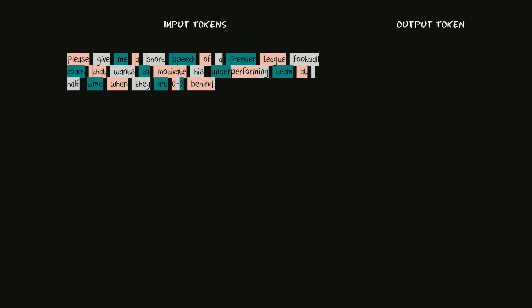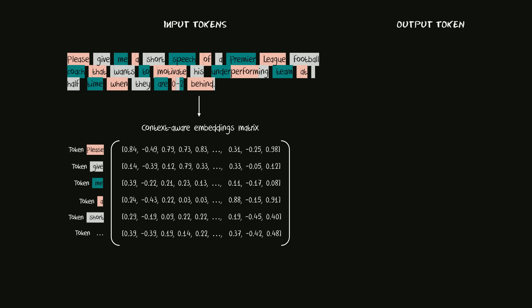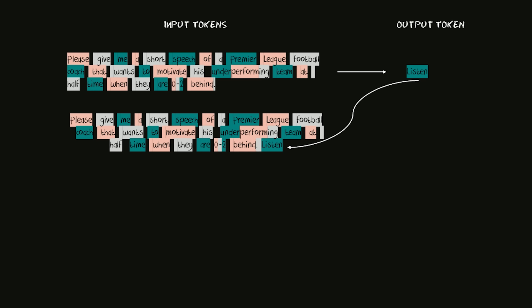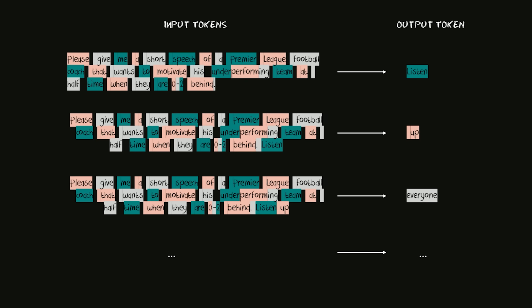So let's go back to our example. Based on the embeddings matrix of our input prompt, the first output token might be 'listen.' In the second cycle, the token 'listen' moves to the input prompt. Based on the new input prompt, new embeddings are created for each input token, and based on the new embeddings matrix, a new next token is chosen — for example, the token 'up.' This iterative process goes on and on until the full speech is written.